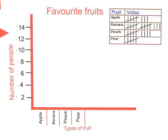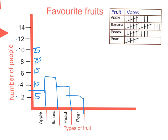If I'd gone up by fives — five, ten, fifteen, twenty, twenty-five — then apple at eight and banana at thirteen would still fit, but it would waste a lot of space up at the top. So you can see that going up by twos is a much better option to use here.